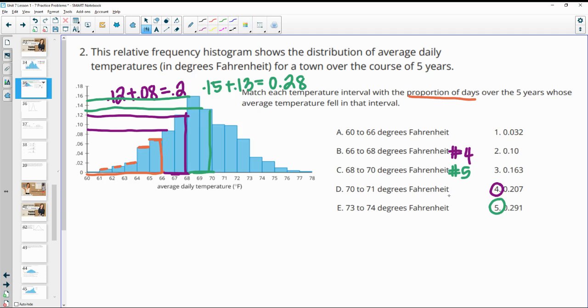If we take a look at 70 to 71, that's just one data point, so right here, close to 0.1. We've got 0.1, so this one's probably number two.